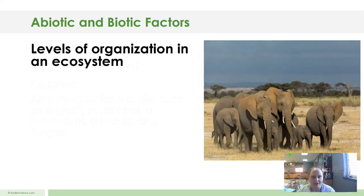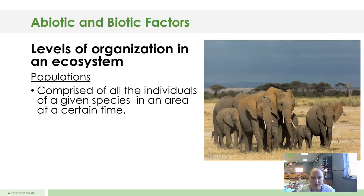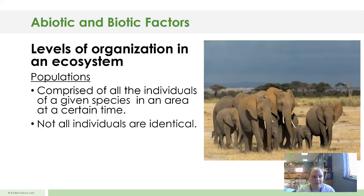The next level of organization in an ecosystem is populations. When we talk about populations, it's comprised of all individuals of a given species in an area — so all elephants in that area, or all zebras in that area, or all of a certain plant in that area. That's a population of that certain species. Not all individuals are identical. As you can see in the pictures, you have elephants — not all of them are identical, but they are the same species.